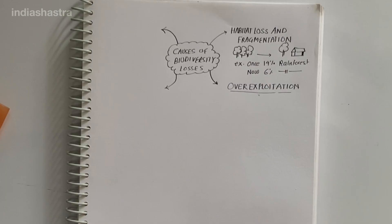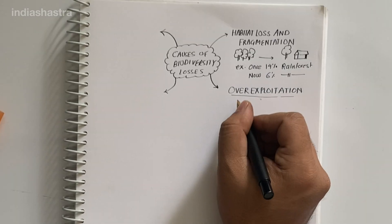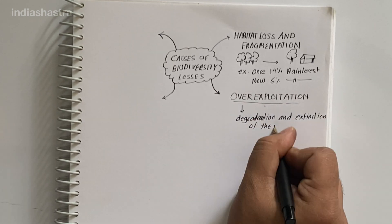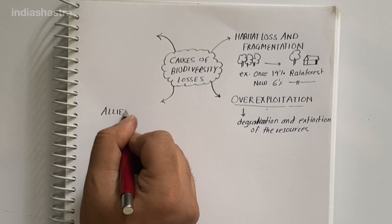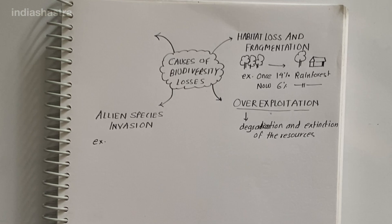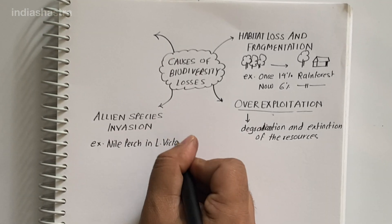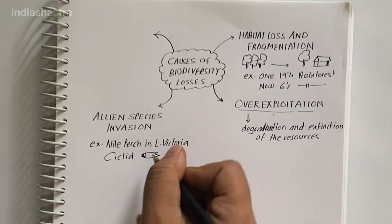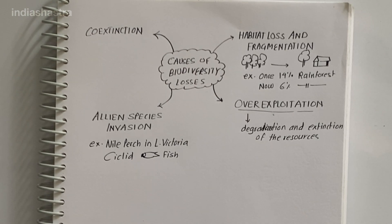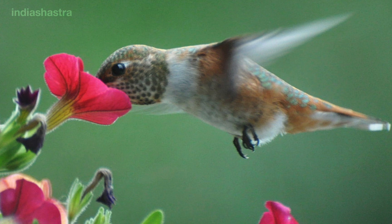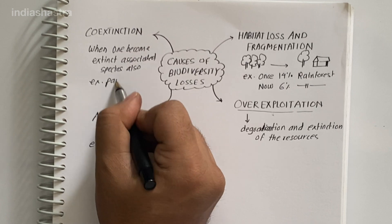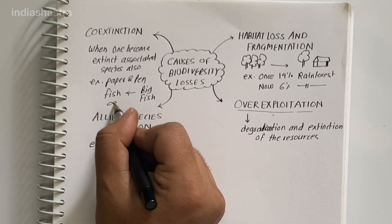The second cause is overexploitation of natural resources by humans, resulting in degradation and extinction of resources. For example, Steller's sea cow, passenger pigeon, and many marine fishes have gone extinct in the last 500 years due to overexploitation. The third is alien species invasion — when alien species are introduced unintentionally, they may become invasive and cause decline of indigenous native species. For example, when Nile perch was introduced into Lake Victoria in East Africa, it led to the extinction of cichlid fish. The next cause is co-extinction: when a species becomes extinct, plant and animal species associated with it in an obligatory way also become extinct — for example, the parasite of an extinct fish also becomes extinct.